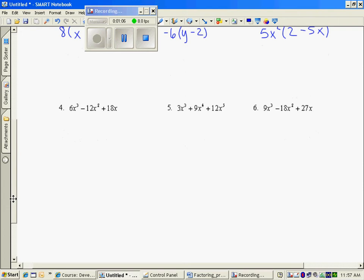It doesn't matter. You do the same thing if you have 3 terms or a trinomial. Looks like I can take a 6 out of each, and they each at least have one x. So 6x times (x squared minus 2x plus 3). Redistribute to check your answer.